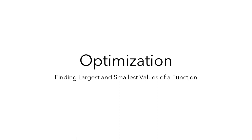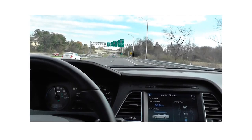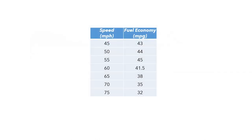In this video, we'll look at the idea of optimization, which is about finding the largest and smallest values of a function on an interval. When many people buy a car, they think about its fuel economy — how far it will go on a gallon of gas. One thing many people don't realize is that your fuel economy is affected by the speed at which you drive. The Argonne National Laboratory has developed a system to simulate a mid-sized car driving at highway speeds and to predict the fuel economy.